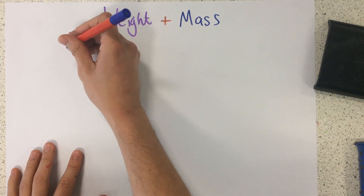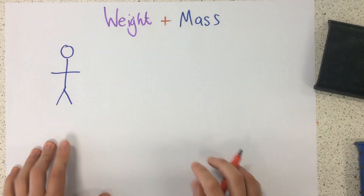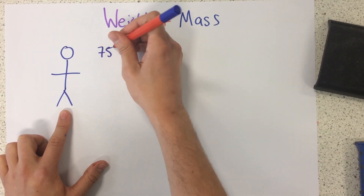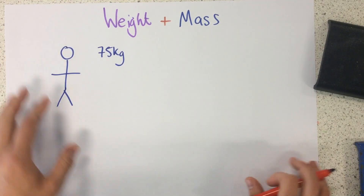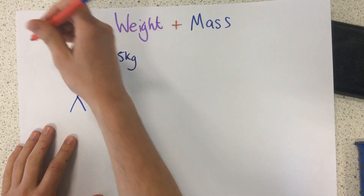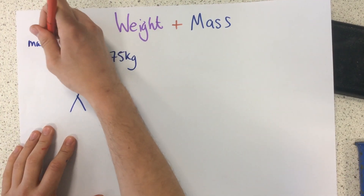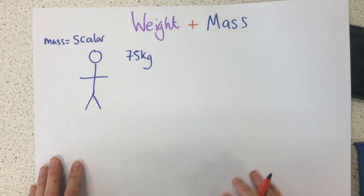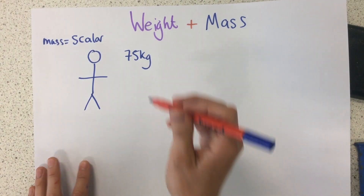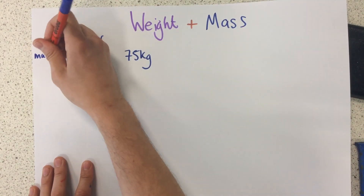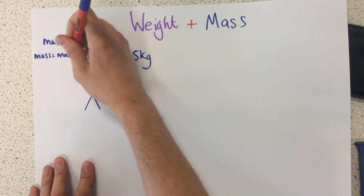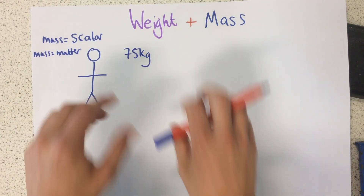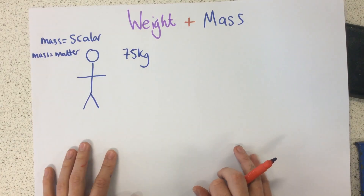So first of all, let's think about mass. Let's imagine we have this person here. Their mass is 75 kilograms. Mass is a scalar quantity — it just has a size, not a direction. Basically, what mass means is the matter that this person or object is made from. The atoms in their body, the matter that makes them up, is 75 kilograms.